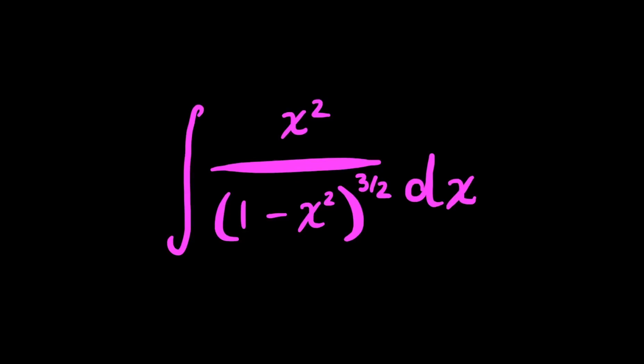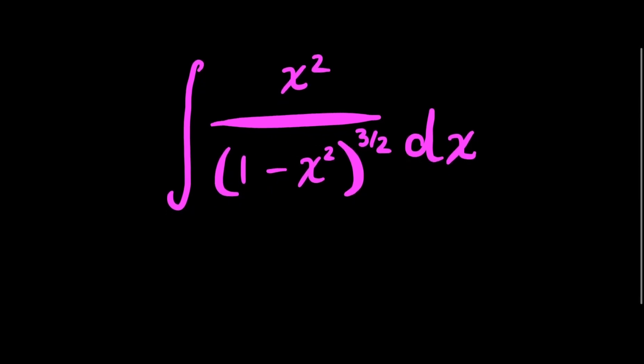Let's integrate x squared over 1 minus x squared raised to 3 halves, dx. This is an interesting looking integral, and this is one I would solve using trig substitution.